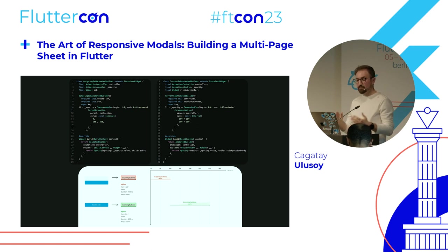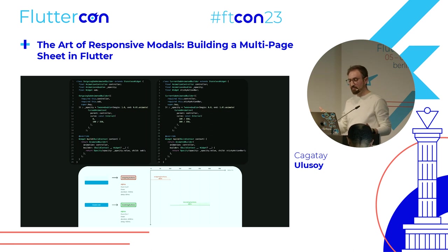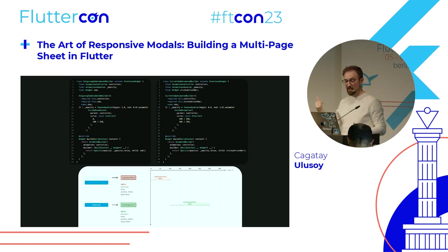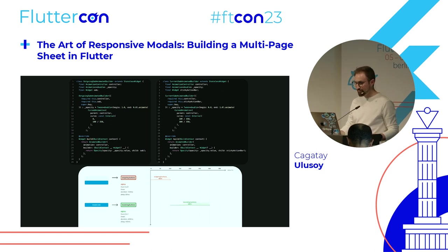When the pagination animation status is completed, we remove the outgoing widgets from the widget tree. Inside the AnimatedSwitcher we have a Stack with WoltModalSheetLayout for current and outgoing pages, which positions each page component for incoming and outgoing according to design guidelines. We keep the outgoing pages in the widget tree until the animation controller is completed.